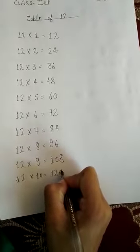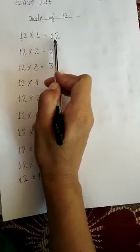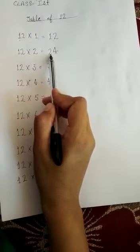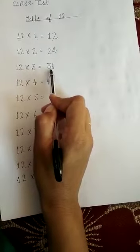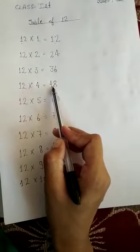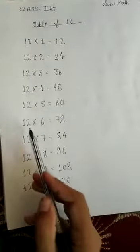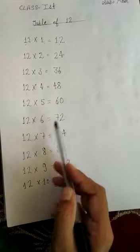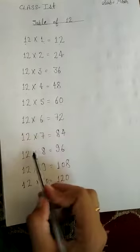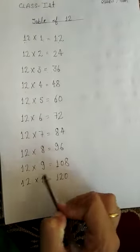12 times 10 jah 120. Repeat kareengi. 12 vanja 12, 12 dunja 24, 12 treja 36, 12 charja 48, 12 panja 60, 12 cheyja 72, 12 satja 84, 12 athja 96, 12 navja 108, 12 dasja 120.